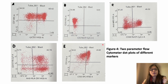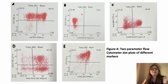Here are examples of two-parameter flow cytometry dot plots for different markers. One plot shows CD7 and CD3 both positive, corresponding to T-cell leukemia. Another plot shows only CD10 positive, corresponding to B-cell leukemia. Another shows MPO positive and CD34 positive, corresponding to acute myeloid leukemia. A further plot shows CD117 and HLA-DR positive — also acute myeloid leukemia. Finally, CD13 and CD33 positive also corresponds to acute myeloid leukemia.